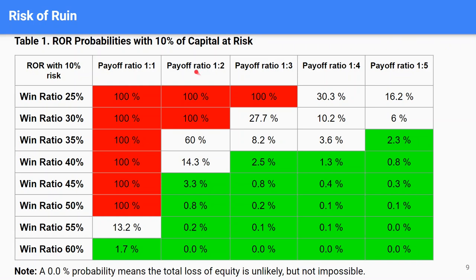But if you have a payoff ratio more than one to one — which is highly recommended — for example one to two, you can see the Risk of Ruin hugely decreases to 40%. And if you can also increase your win ratio, then your Risk of Ruin will go to zero.